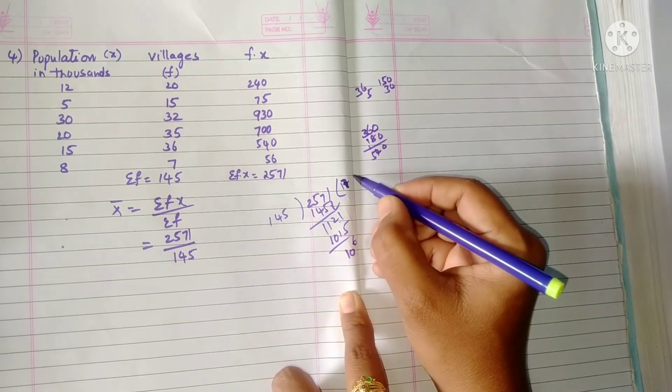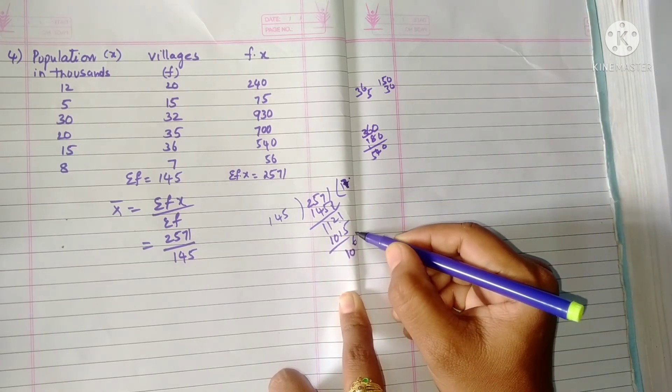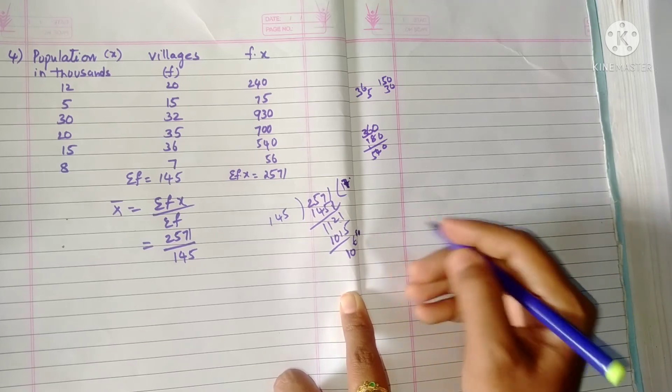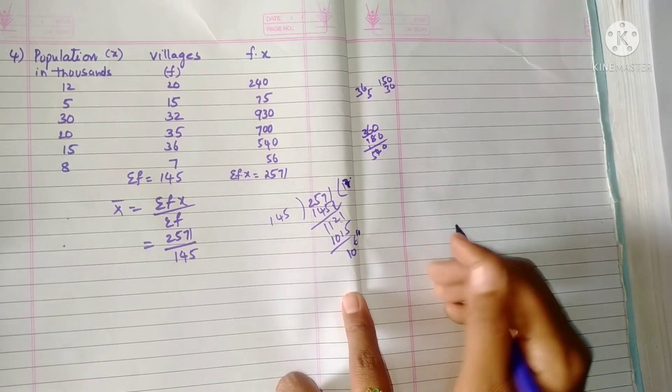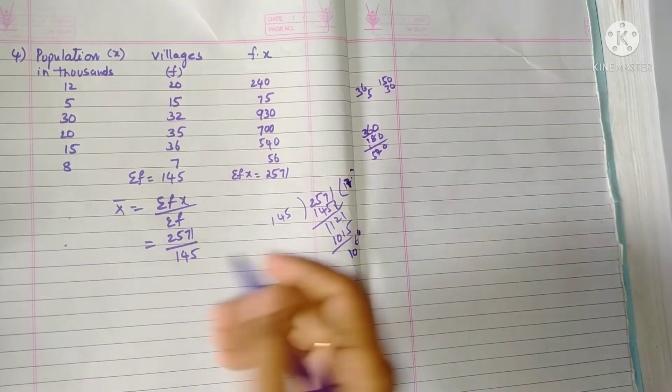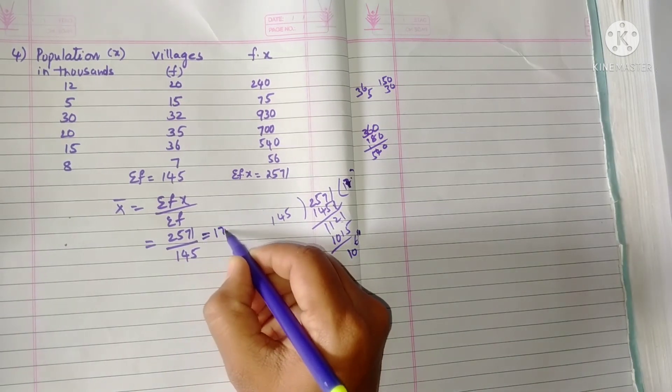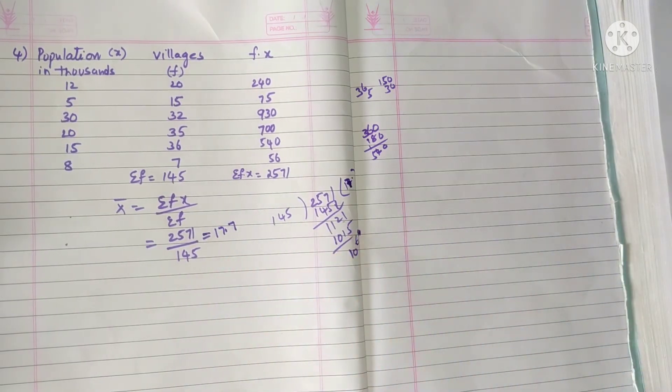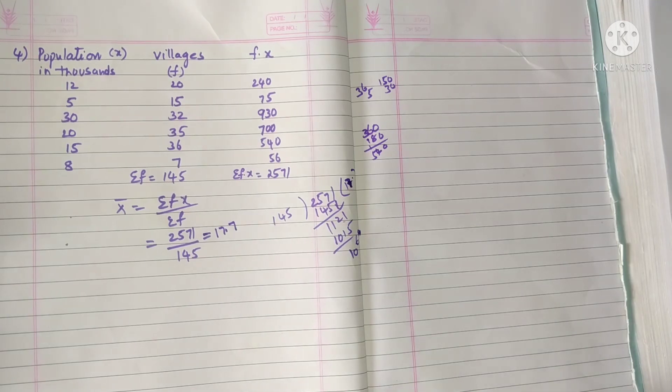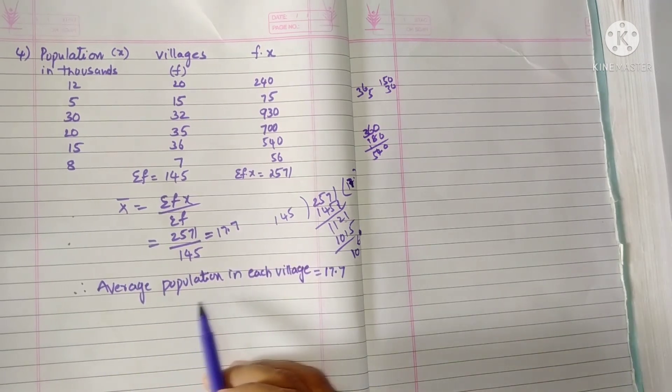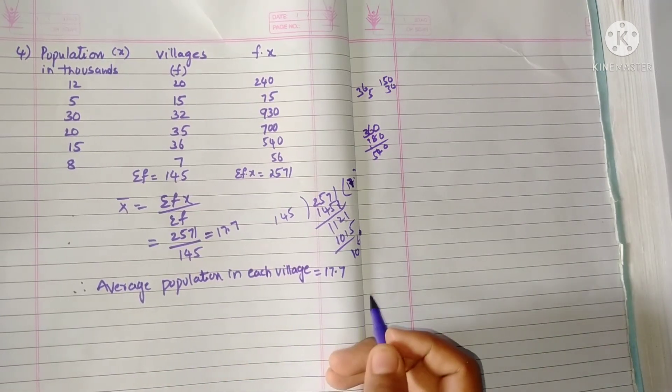So if you do like that, it is 7.7. Okay, so what is this here? Average population in each village. So average population in each village is equal to 17.7.